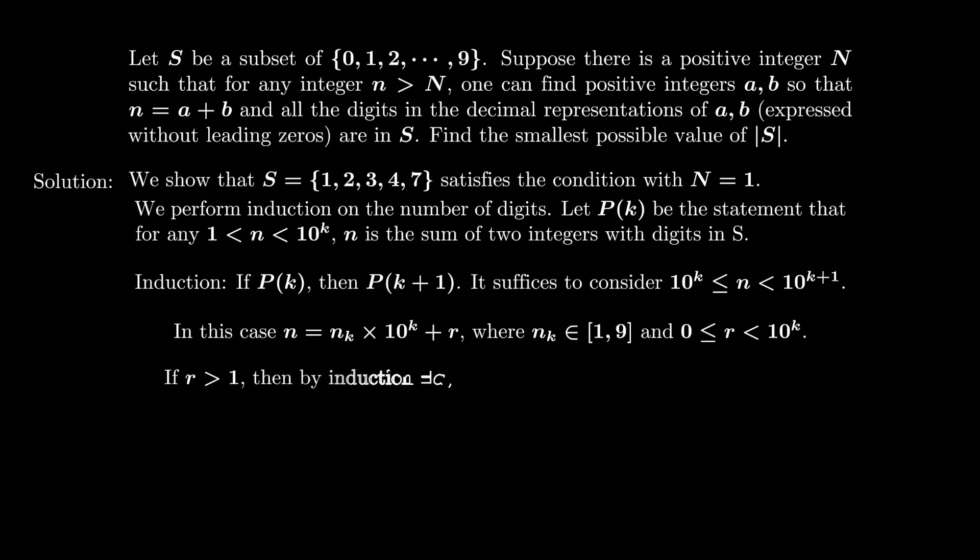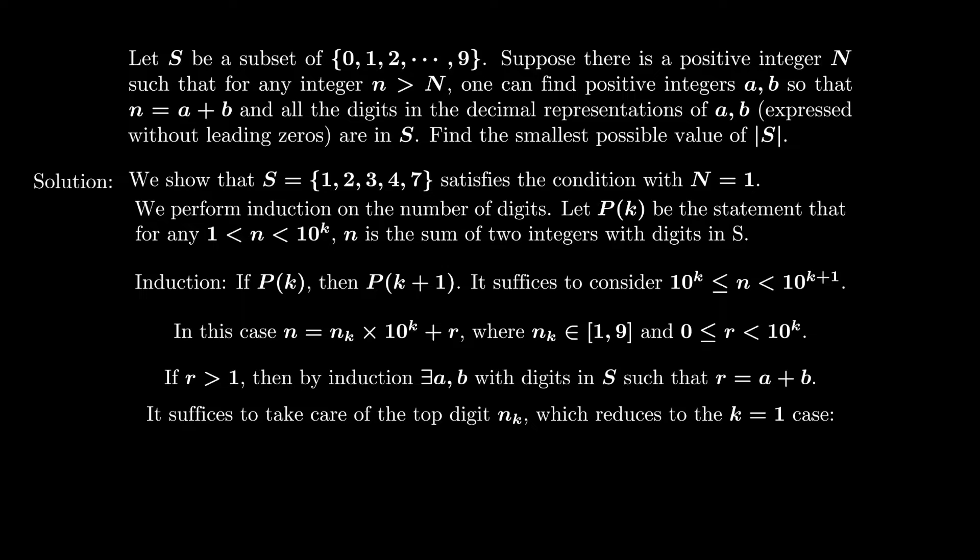If r is larger than 1, then the induction can be applied. This means we can find a and b with digits in S such that r is the sum of a+b. Now it remains to take care of the top digit, which is essentially the same as the easy case when k equals to 1. For example, if n_k is 1, then we add a top digit 1 to a. If n_k is 2, then we add a top digit 1 to both a and b, and so on.